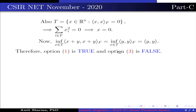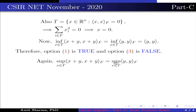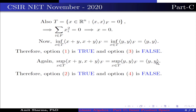Therefore option 1 is true and option 3 is false. Similarly, supremum over x in T of ⟨x+y, x+y⟩ over f equals supremum over x in T of ⟨y, y⟩ over f, because x = 0, which equals ⟨y, y⟩ over f. Therefore option 2 is true and option 4 is false. Hence, options 1 and 2 are true.